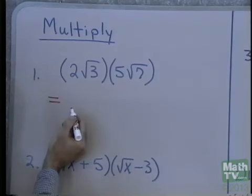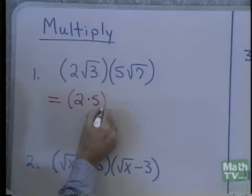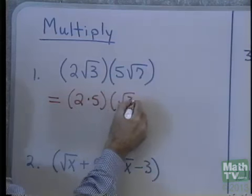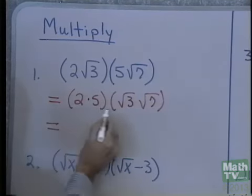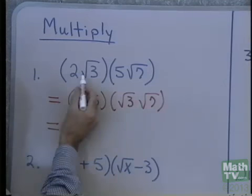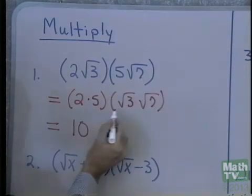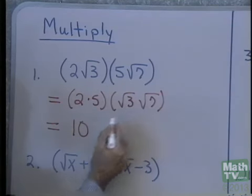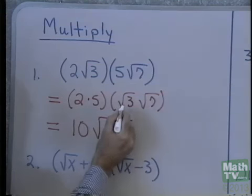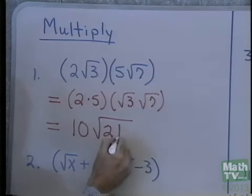The reason why is because of the commutative and associative properties of multiplication. We can rewrite this as 2 times 5 times square root 3 times square root 7. We don't show this step all the time, but this is the reason why we can multiply 2 and 5, and 3 and 7. 2 times 5 is 10. Square root 3 times square root 7, using property 1 for radicals, is the square root of 3 times 7, since they're both under a square root. So we get 10 square root 21.